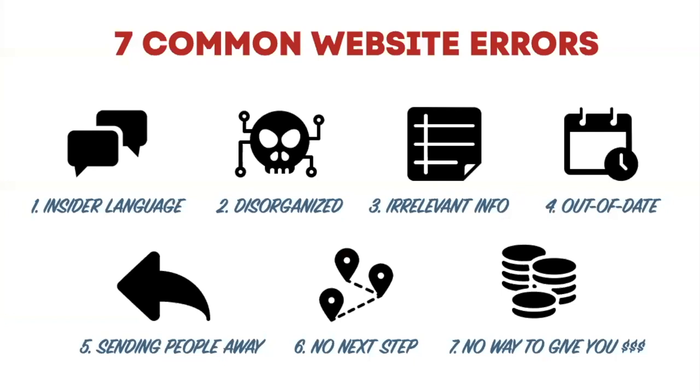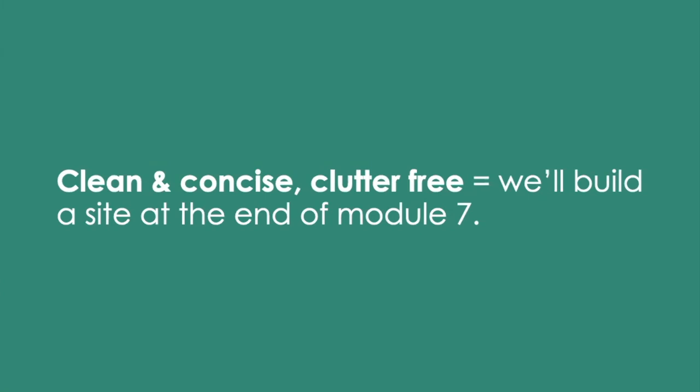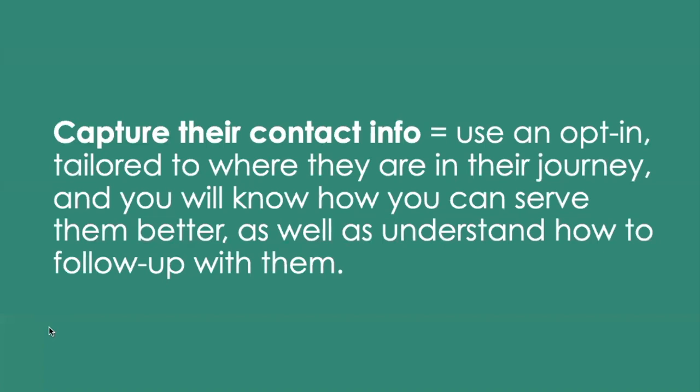Now that you know what not to do, here are seven things to do. Number one: be clean, concise, and clutter-free. At the end of Module 7 we're going to actually build out a site — you can get a free template, change colors, swap buttons, drop in pictures, and it will look like you once you put your name and logo on it. Number two: capture their contact information. Use an opt-in tailored to where they are in their journey, and you'll know how to serve them better and how to follow up.